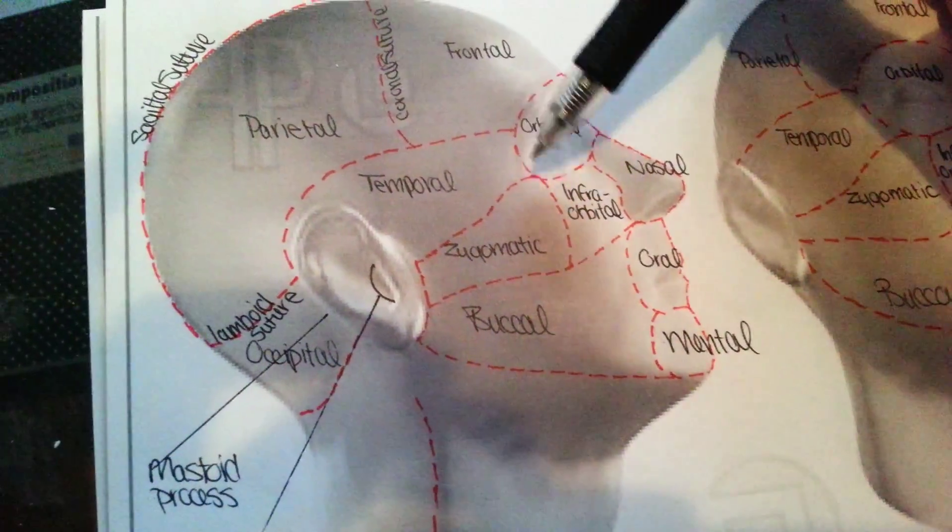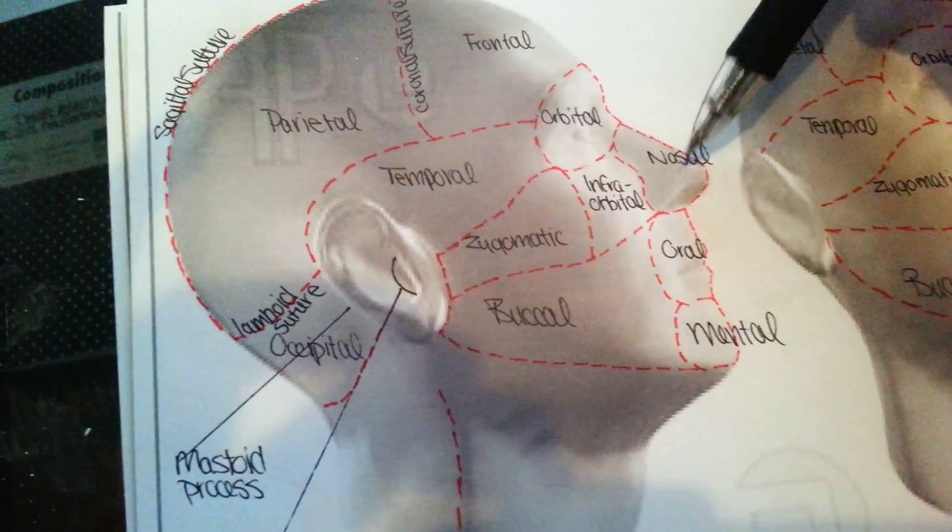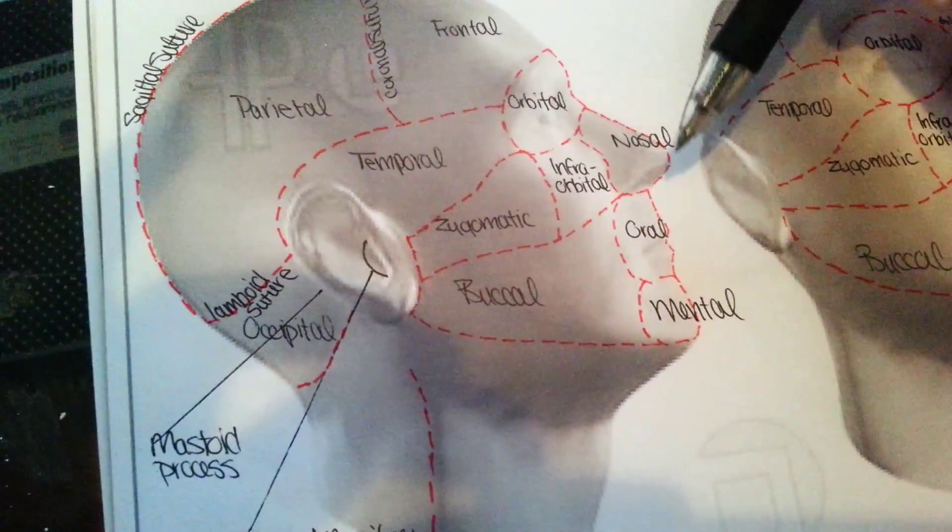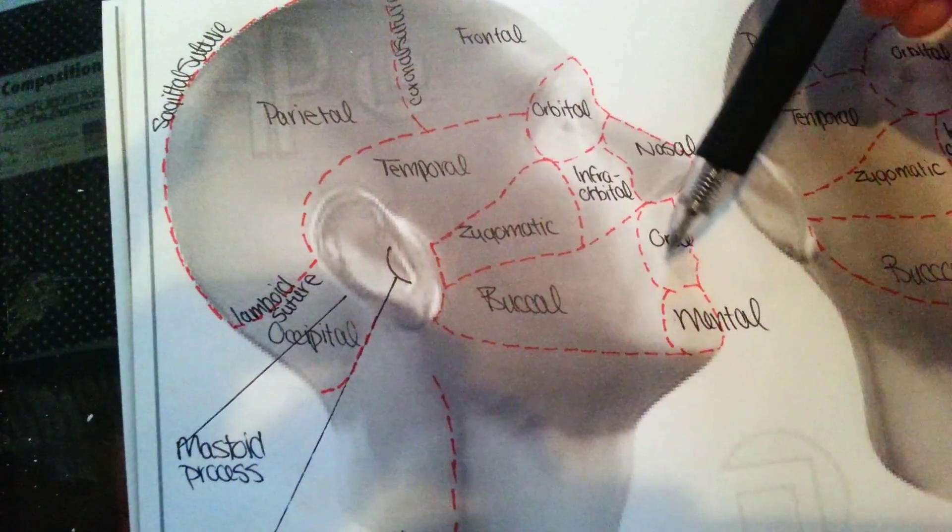Around the eyeball, it's the orbital region. The nose area, nasal, it's kind of self-explanatory, as well as around the mouth being the oral region.